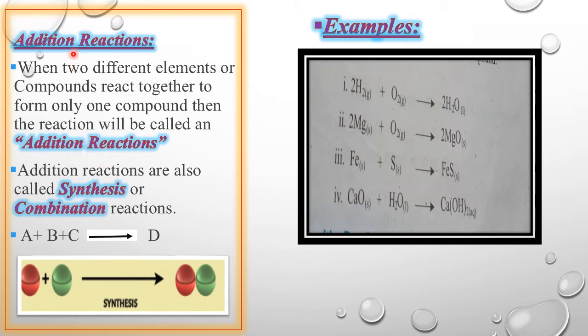Students, Addition Reactions understand करने के लिए a simple example. Suppose I have three items, A, B, and C, and I have combined them, and after combination a single new product is formed. This reaction is Addition Reaction. Addition Reactions are also called Combination Reactions or Synthesis Reactions. Now we will discuss some examples.